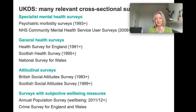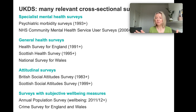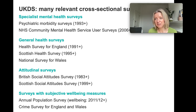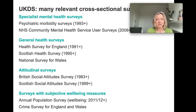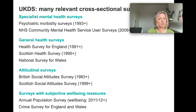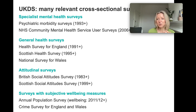In the UK Data Service there are many different cross-sectional surveys. There are a series of general health surveys which are really useful if you want to look at non-specific general mental health problems. For example, the Health Survey for England, which has been running since the early 1990s, includes the General Health Questionnaire, which is a very useful measure. It's also really worth having a look at some of the attitudinal surveys — for example, British Social Attitudes and the Scottish Social Attitudes Survey have included modules in various years asking people about their attitudes towards people with different mental health conditions, and also about their attitudes towards therapy and treatment.